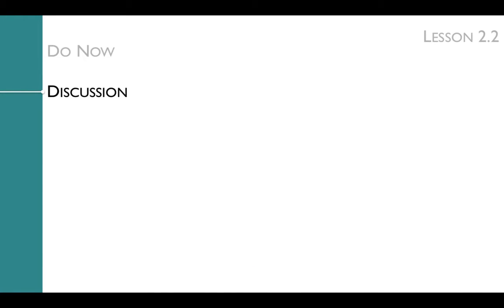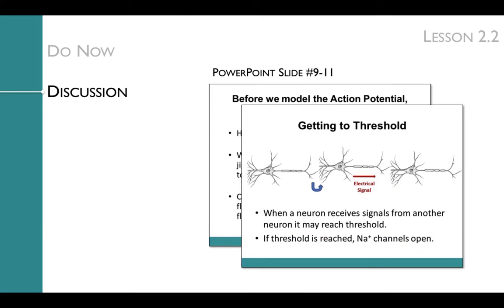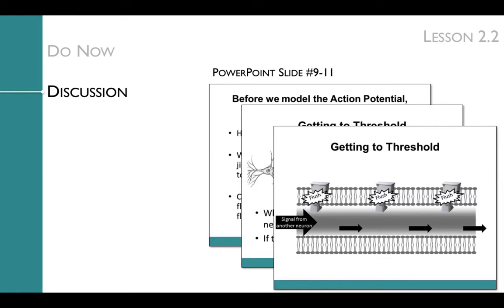Finally, threshold is introduced first with the toilet flush analogy on slide 9, then applied to neurons and the opening of sodium channels on slide 10, and then to the length of the axon on slide 11. Sodium channels open like toilets flush — threshold needs to be reached, and then they open and an action potential fires. This then triggers the next sodium channels to open on down the length of the axon. Slide 11 is animated, so you can show each of these steps individually.